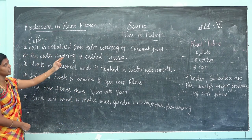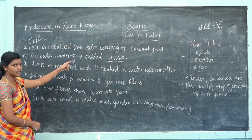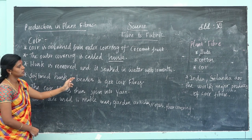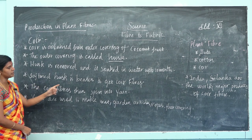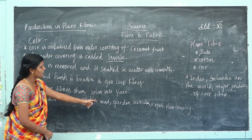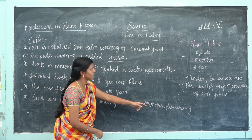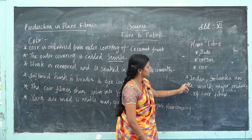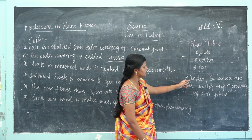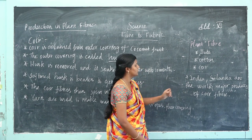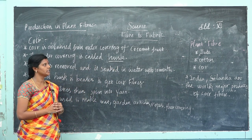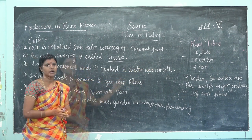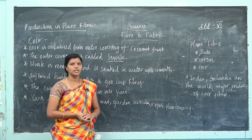India and Sri Lanka are the world's major producers of coir fibers. Today in class we have seen the production of plant fibers: jute, cotton, and coir. I hope you all have understood today's topic. Thank you, students.